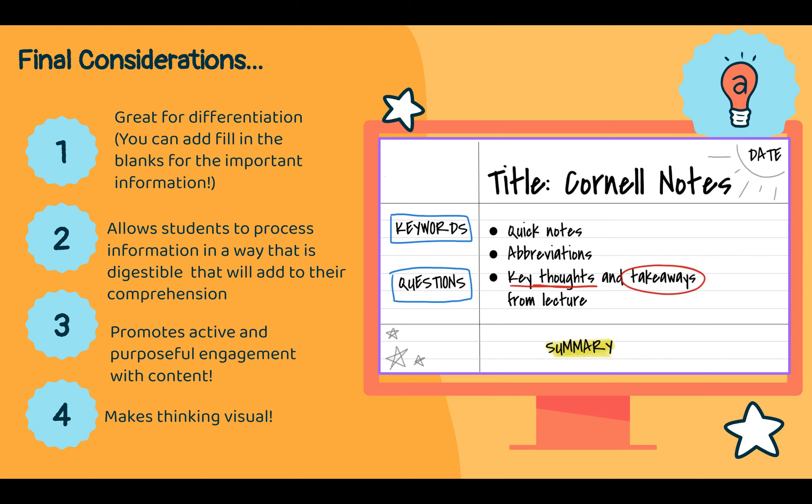So some final considerations about Cornell notes and how it relates to sixth grade. Cornell notes are a great way for differentiation. You can add fill-in-the-blank for important information instead of having kids take notes on their own and possibly missing what that important information is. It also allows students to process information in a way that is digestible and that will add to their comprehension.